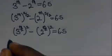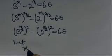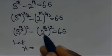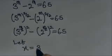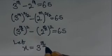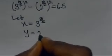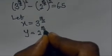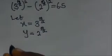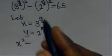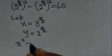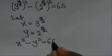From here, we let x equal to 3 raised to the power m over 2, and let y equal to 2 raised to the power m divided by 2. Then, substituting, we have x squared minus y squared equals 65.